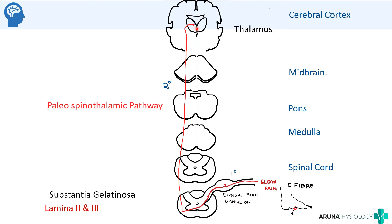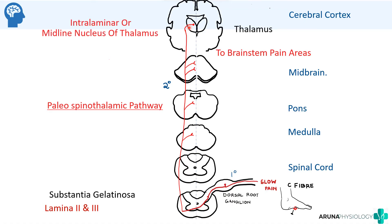The emotional experience of pain is mainly caused by the slow pain pathway, because it sends collateral fibers to different brain areas responsible for that emotional experience. These collaterals go to brain stem pain areas, especially the periaqueductal gray area, at the medulla, pons, and midbrain. Finally, they reach the thalamus and relay at the intralaminar or midline nucleus of the thalamus. The third order neuron from the thalamus projects to the somatosensory area of the cortex, completing the paleospinothalamic pathway.